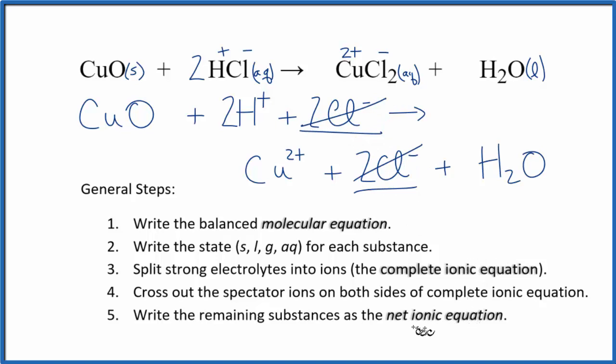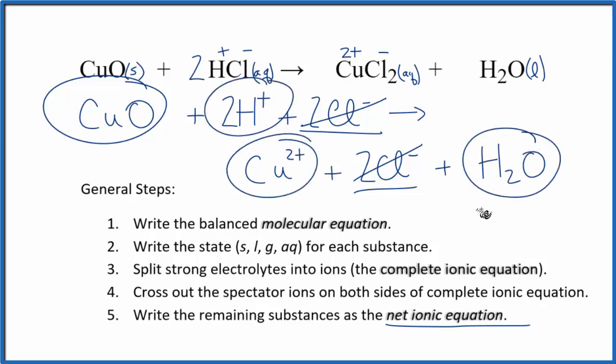Once I do that, I'm left with the net ionic equation. So that's everything we didn't cross out, right here. So let me clean this up, I'll add the states in, and then we'll have a really nice net ionic equation for CuO plus HCl.